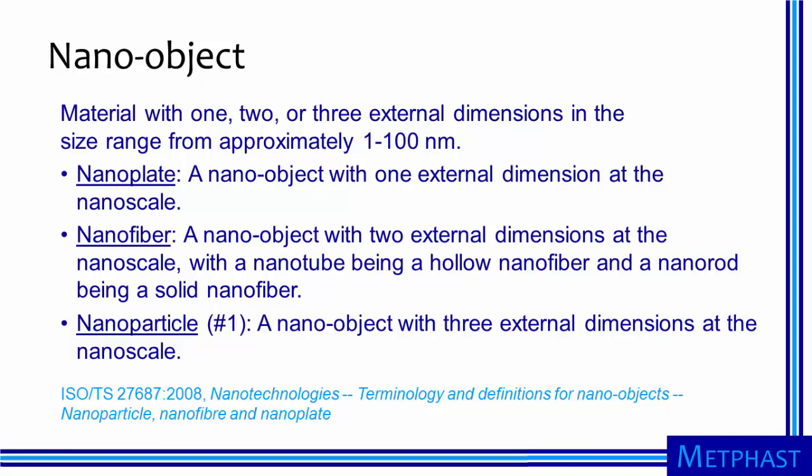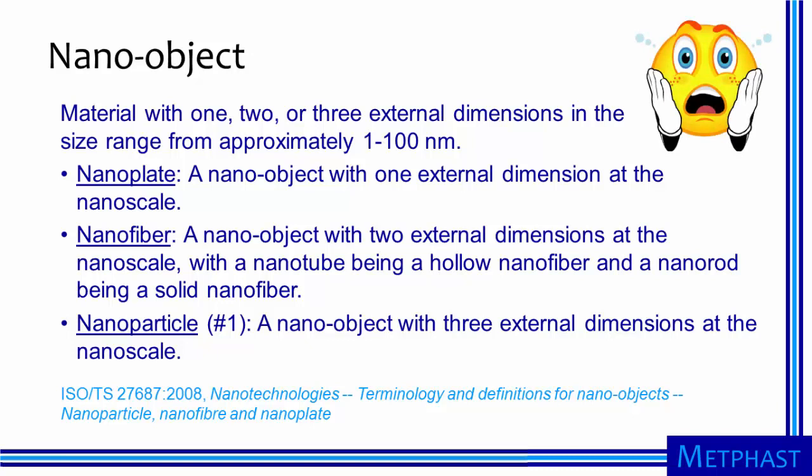Nanoparticles, according to the ISO standard, are nano objects with three external dimensions at the nanoscale. This definition for nanoparticles makes them look a lot like ultrafine particles as defined by Pryning. We're certainly running through a lot of definitions — maybe it's starting to fluster us a little bit, but we're not done yet.